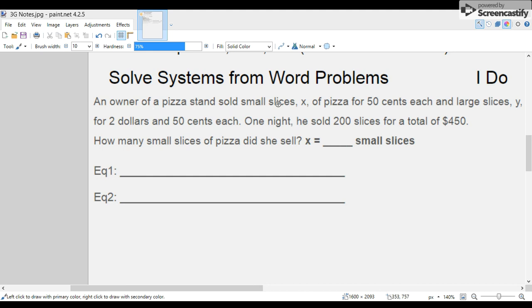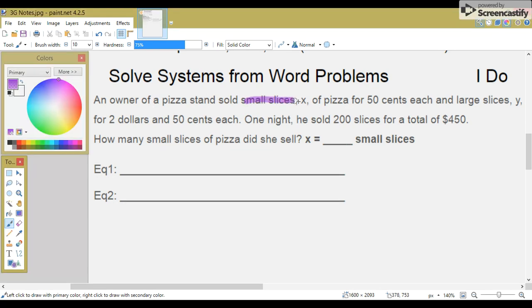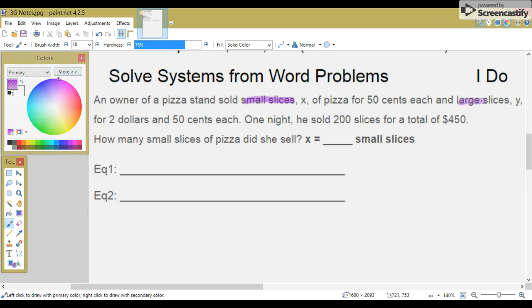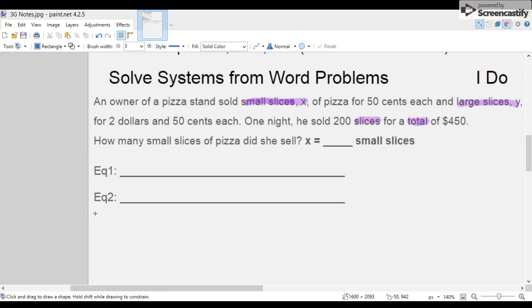First, let's highlight some key words. We have small slices and we have large slices. The large slices are called Y, and the small slices are called X. They sold 200 slices, and the total money was $450.